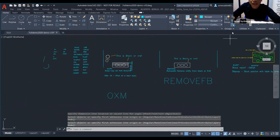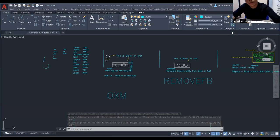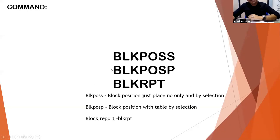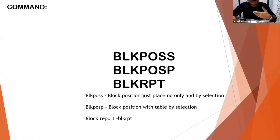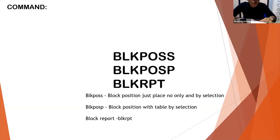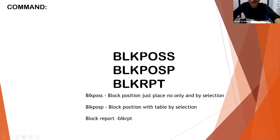Next, we go to BLKPOSS — I find it easier to remember as 'BLACKPINK'. Actually it stands for Block Position, just place not only and by selection. Let me show BLKPOSS. I just type BLKPOSS and press Enter. The command says 'Make sure the UCS is set to new origin'. I type OK, then enter the block string name — I've placed MM10 as the block. Then I select the object, and it will detect the MM10 block objects and generate numbering.